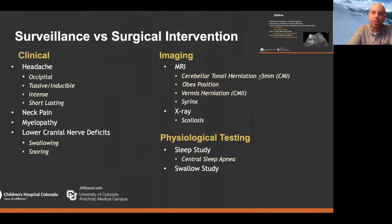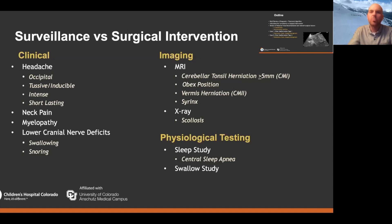Getting back to the outline, the first question was really: how do you make decisions about surveilling a patient versus intervening surgically? Like with pretty much any medical condition, what you're really doing is putting together a puzzle to figure out the most accurate diagnosis and most appropriate treatment. There are clinical pieces, imaging pieces, and potentially physiologic testing pieces that you can put together to come to a conclusion.